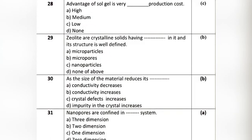Question 4: An advantage of sol-gel is very — production cost. Option A: high. Option B: medium. Option C: low. Option D: none. The correct answer is Option C: low.